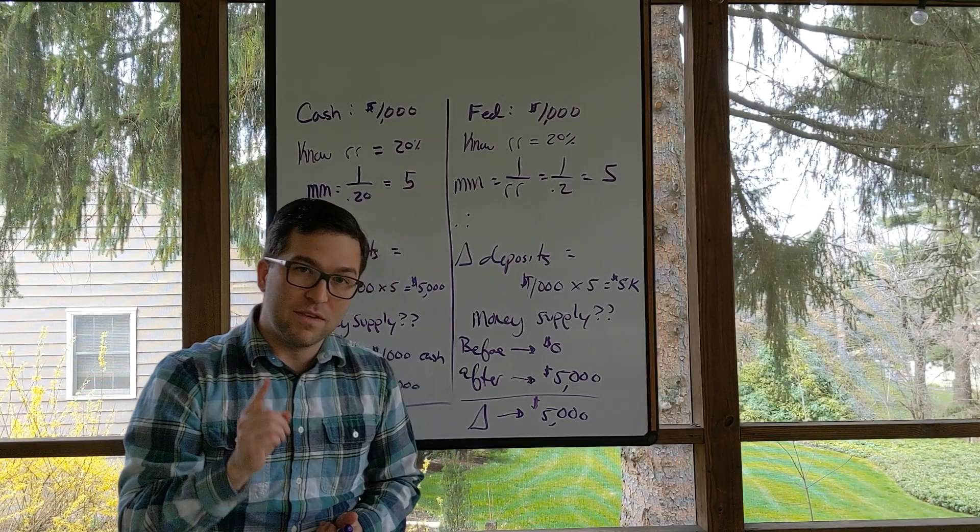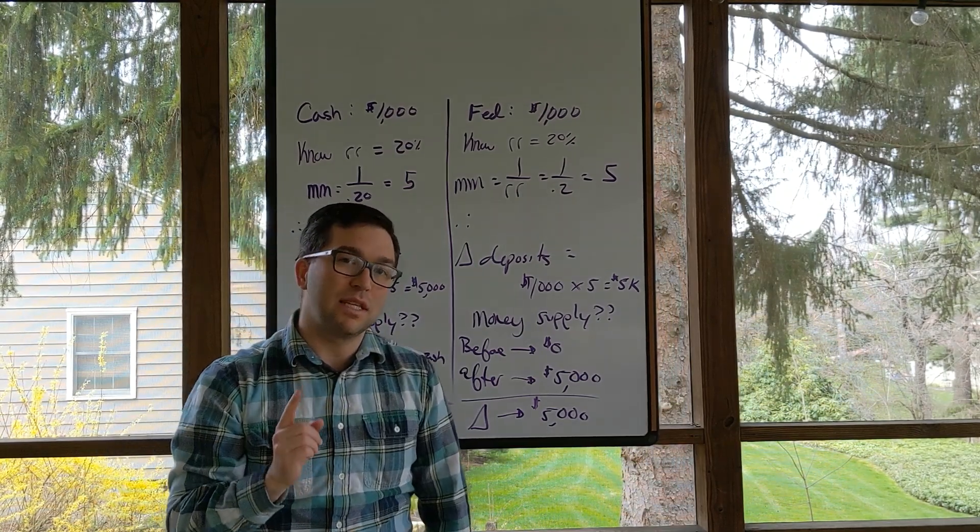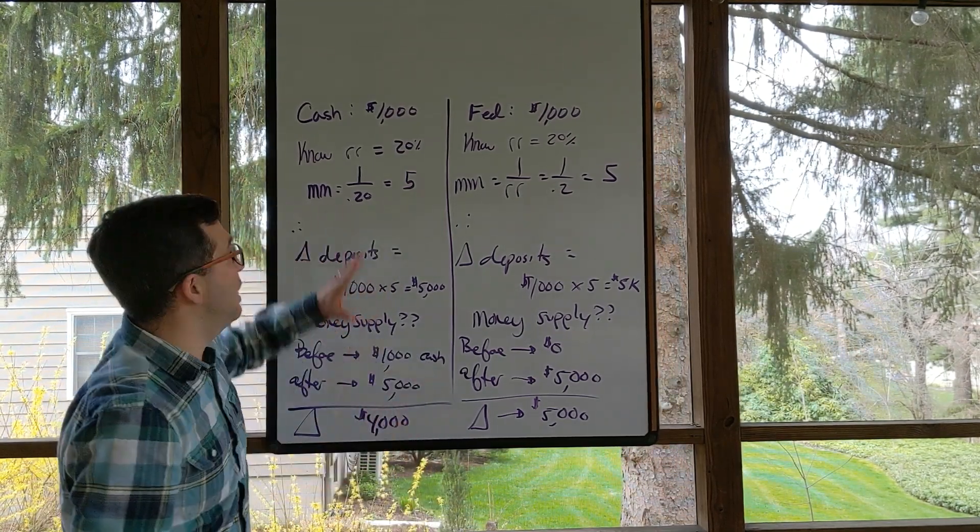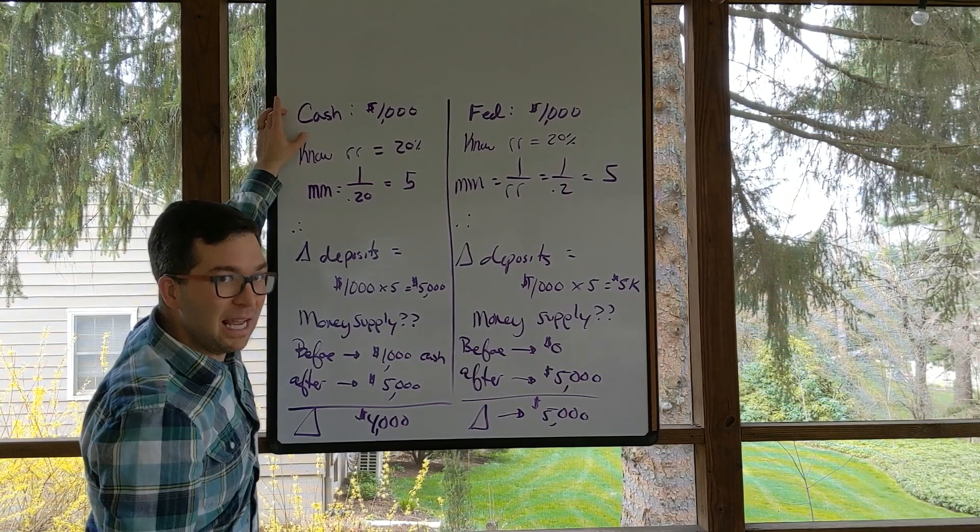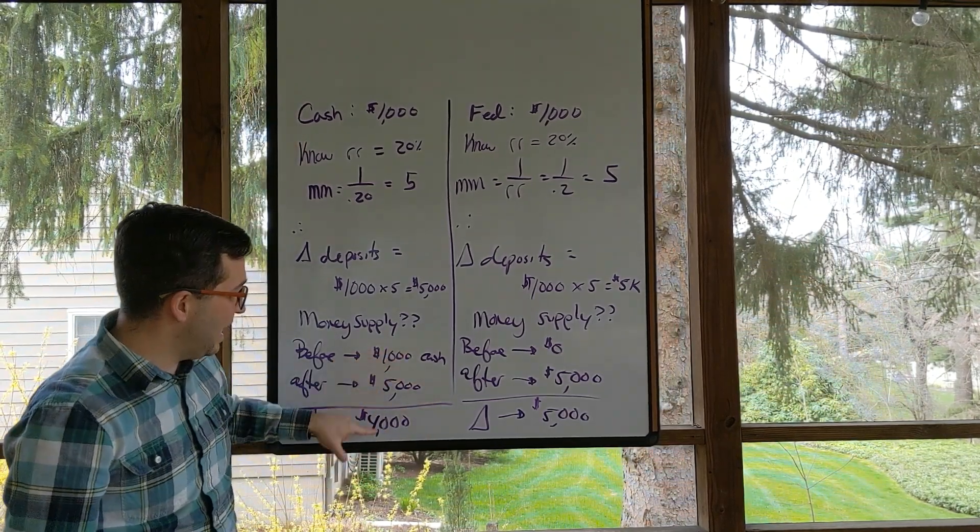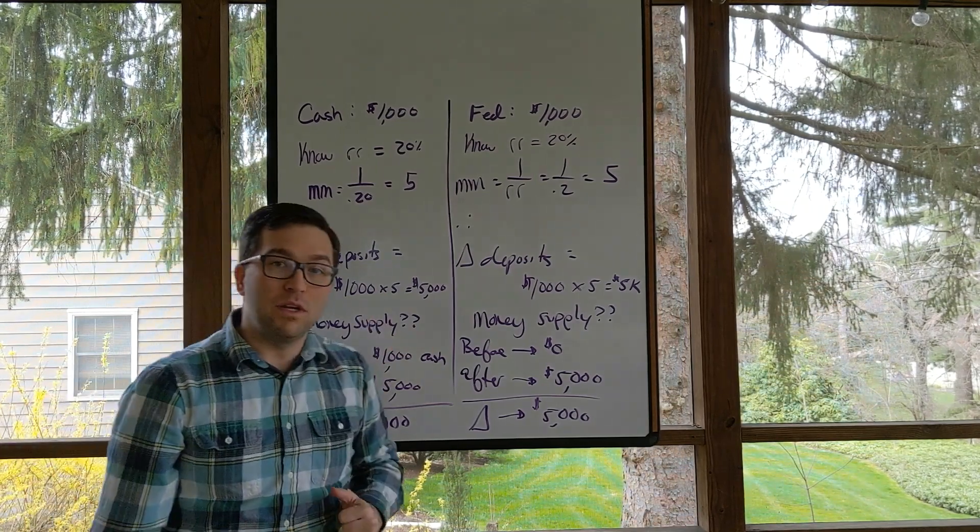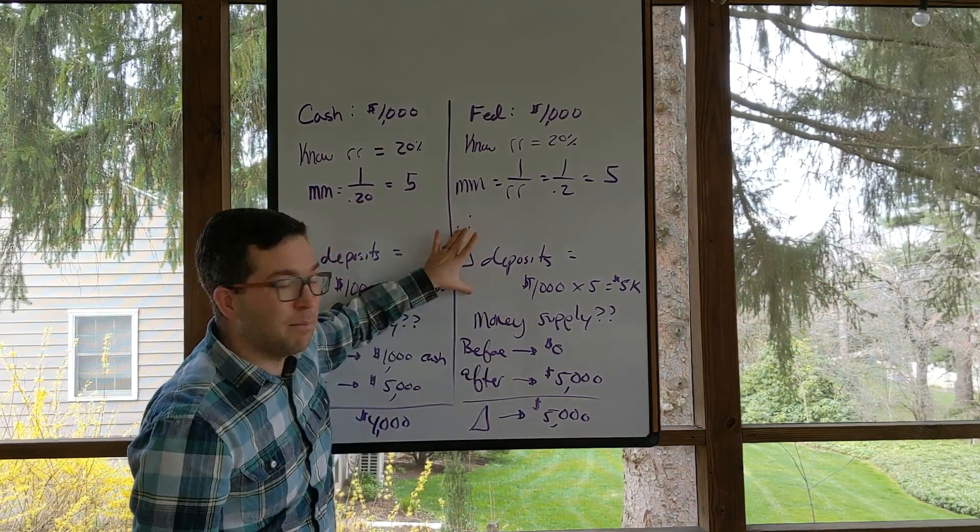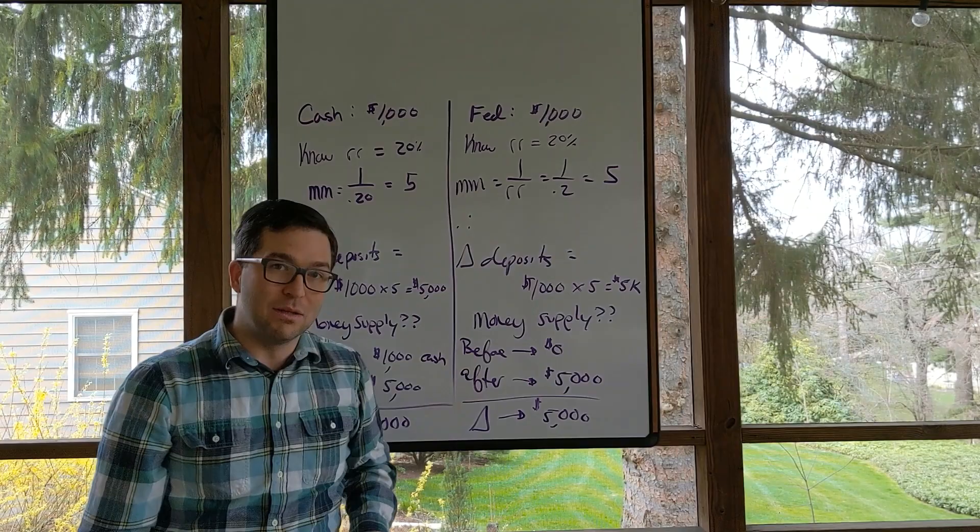This is very important. It's a very important distinction that a lot of students get mixed up. You have to figure out where that initial deposit came from. If it was already in M1, we have to take it out. If it wasn't in M1 to begin with, then the change in the deposits is going to equal the change in the money supply.